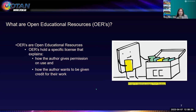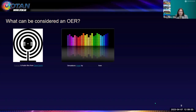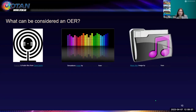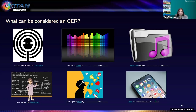OERs hold a specific license that explains how the author gives permission on use and how the author wants to be given credit for their work. Basically any type of learning resource can be considered an OER — podcast and audio files, simulations, music files, lesson plans, online games and apps, books, worksheets — any type of learning resource, as long as it holds a specific license.